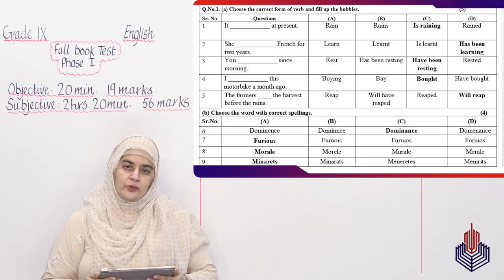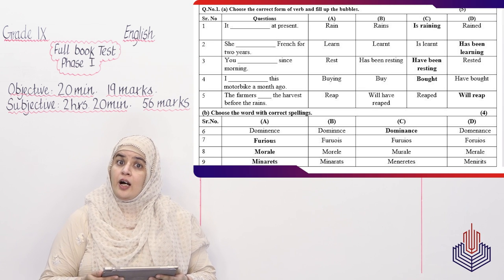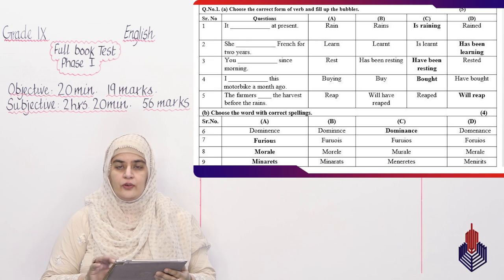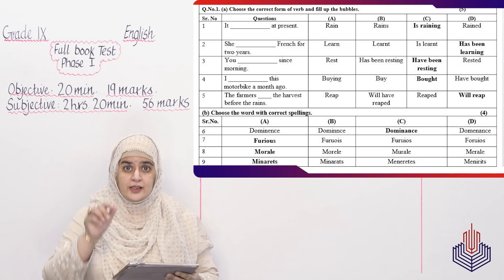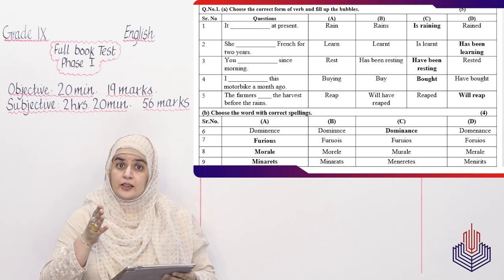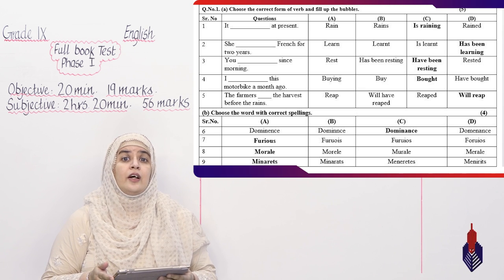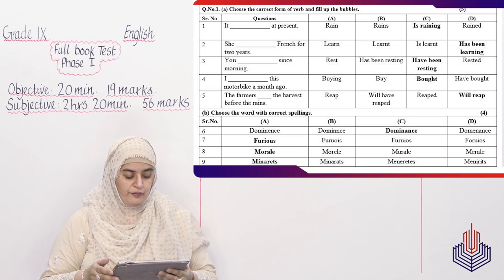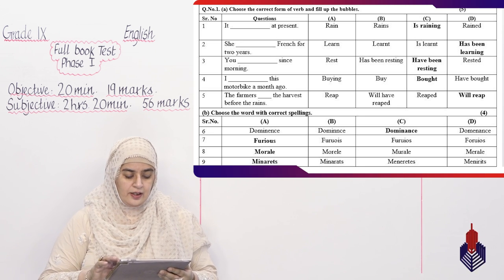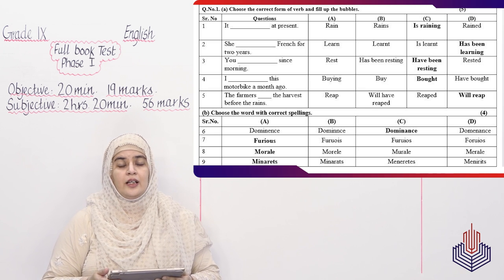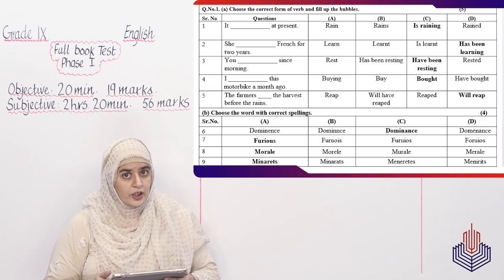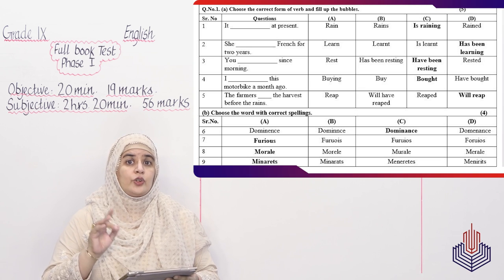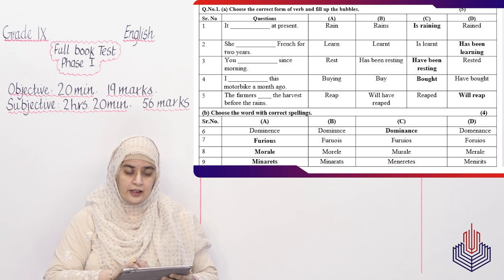Let's start with the MCQ. Sabse pehla MCQ aaj ki paper ka aap se keh raha hai ke it - at present. Rain, rains, is raining ya rained? At present ki baat ho rahi hai. Something that is constantly going on at present, so it is raining. Option number C. Next question: She - French for two years. Learn, learnt, is learnt, has been learning. Something that she has been constantly doing. She has been constantly learning French for the past two years and she is still learning it. So option number D, has been learning is the correct answer.